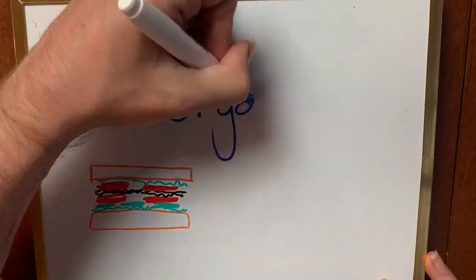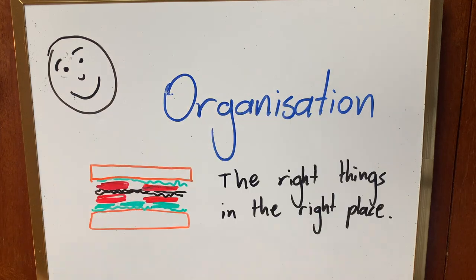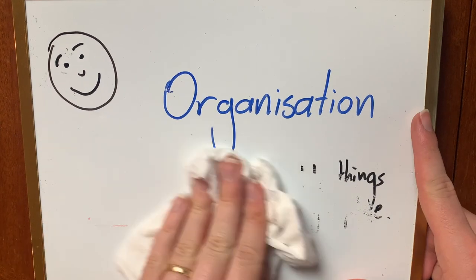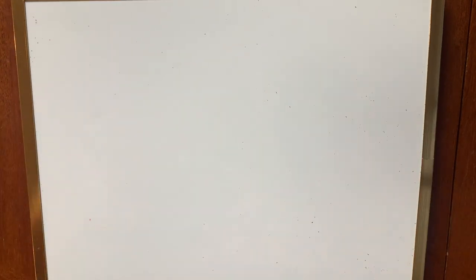This is why organization is one of the six plus one traits of writing. The way you organize your writing will depend on the kind of writing you're doing.